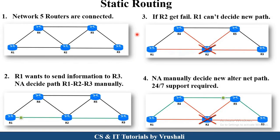First, let's understand the concept of static routing with an example. Consider that there are a total of five routers present in the network. A router is a device used to connect different types of LANs or local area networks. Now suppose router R1 wants to send information to R3 by using static routing. Static routing is manually performed by a network administrator, who manually decides the path — R1 to R2 and R2 to R3. This path is manually decided and stored into the routing table, so a particular router sends information according to this path.